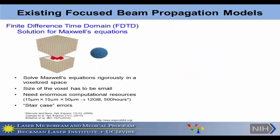Looking at what models are available for scattering propagation: one technique is the finite difference time domain solution for Maxwell's equations, or FDTD — this is known as the gold standard. When you are interested in a certain volume, we represent it with small voxels. For a 100 micron × 100 micron × 100 micron volume, the voxel size has to be lambda/20 or smaller to get accurate results.